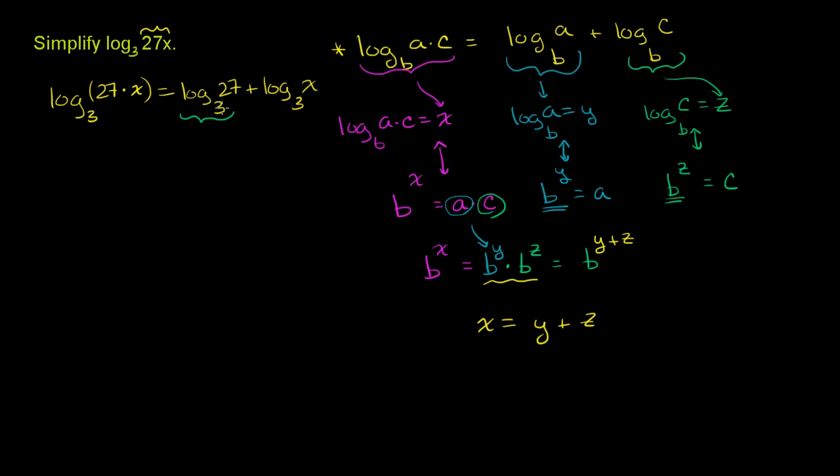This tells us what power do I have to raise 3 to to get to 27? 3 to the question mark is equal to 27. Well, 3 to the third power is equal to 27. 3 times 3 is 9, times 3 is 27. So this right over here evaluates to 3.